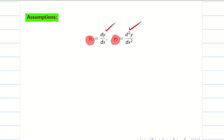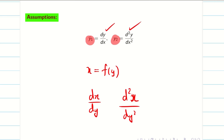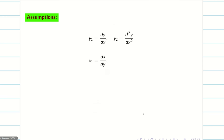Sometimes we derive x as a function of y. In this case we find dx by dy and d squared x by dy squared. In this situation we assume x1 is dx by dy and x2 is d squared x by dy squared.